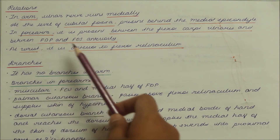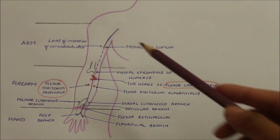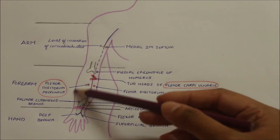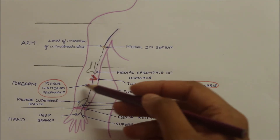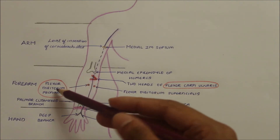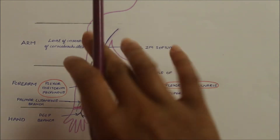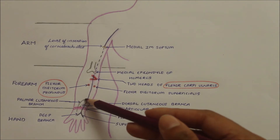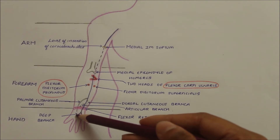Now looking at the branches of the ulnar nerve: it has no branches in the arm. In the forearm it has a muscular branch that supplies the flexor carpi ulnaris and the medial half of the flexor digitorum profundus. It also provides a palmar cutaneous branch that passes above the flexor retinaculum and supplies the skin of the hypothenar eminence.